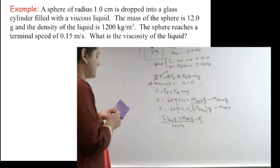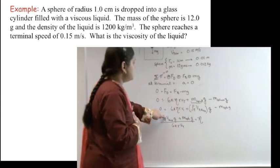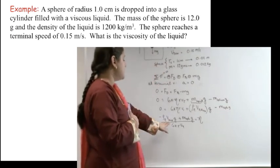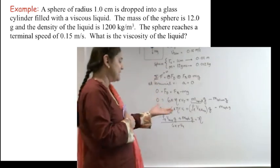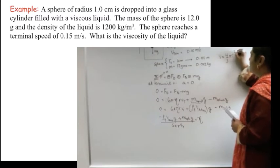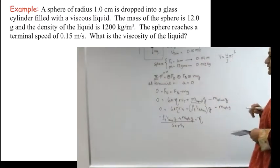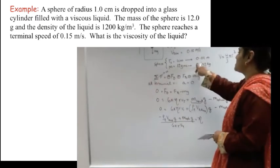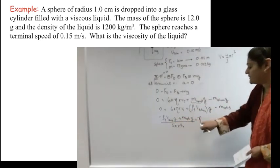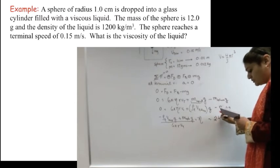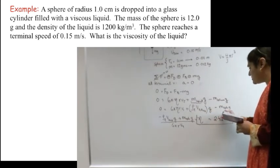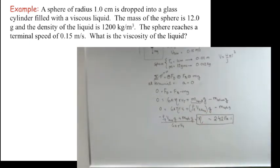And now I can start plugging values in. ρ_l is going to be 1200. V displaced is going to be the same as the volume of the sphere. And why is that going to be true? Because it's all immersed in it. So the amount of water that it displaces equals the volume of the sphere. And volume of the sphere is going to be given by 4/3 πr³. You have r, you can plug that in and solve for it. g is 9.8, mass of the sphere is given, which is 12 grams, g is again 9.8, r is given and terminal velocity is given. All you have to do is solve, plug in all of these numbers, and my η comes out to be 2.42 pascal seconds. The drag force comes out to be 2.42 pascal seconds.